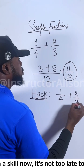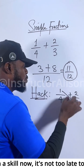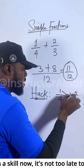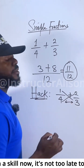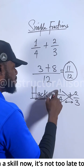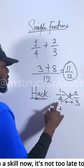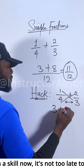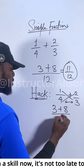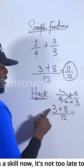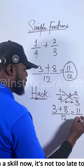Don't waste your time. Just cross-multiply these two, multiply these two, and then multiply the denominators. 3 times 1 gives you 3, plus 4 times 2 gives you 8, divided by 4 times 3 gives you 12. So 3 plus 8 gives you 11 over 12.